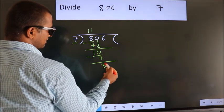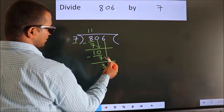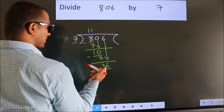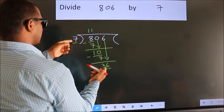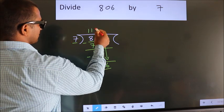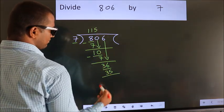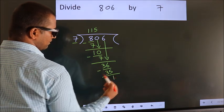After this, bring down the beside number. So 6 down. So 36. A number close to 36 in 7 table is 7 fives, 35. Now we subtract. We get 1.